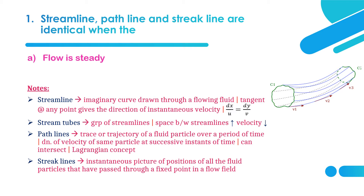What is a streamline? It is an imaginary curve drawn through a flowing fluid, and the tangent at any point gives the direction of instantaneous velocity. You can see in this diagram — all the blue lines and dotted lines represent the streamline. The tangent at any point on the streamline gives the direction of instantaneous velocity, that is V1, and this tangent line represents the velocity V2.